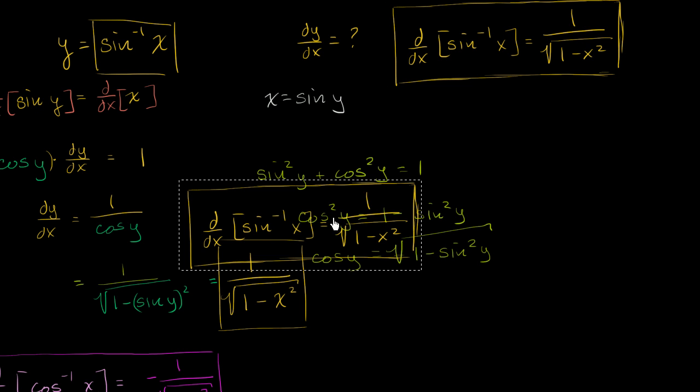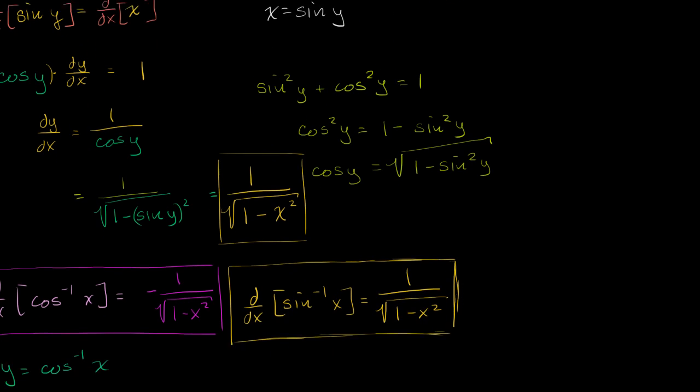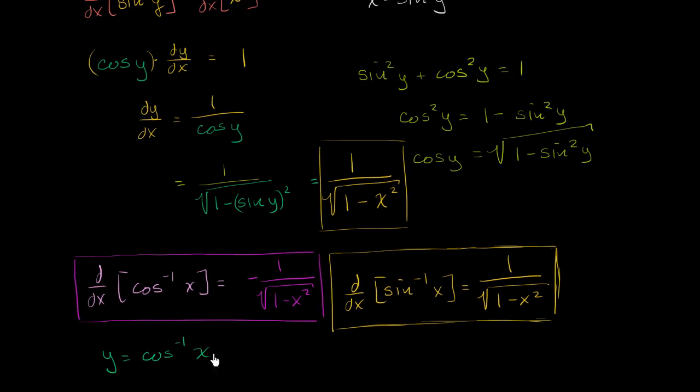So let me copy and paste that. I'm going to paste it down here. And now let's look at them side by side. So for taking the derivative with respect to x of the inverse cosine function, we have negative 1 over the square root of 1 minus x squared. If we're looking at the derivative with respect to x of the inverse sine, it's the same expression except now it is positive.